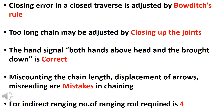Closing error is adjusted by Bowditch rule. It is called closed traverse.